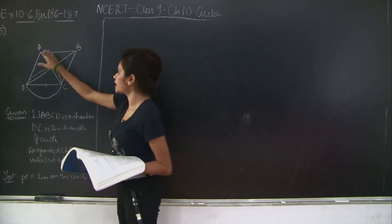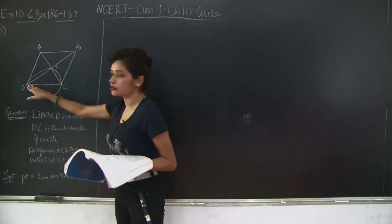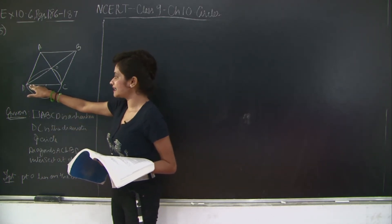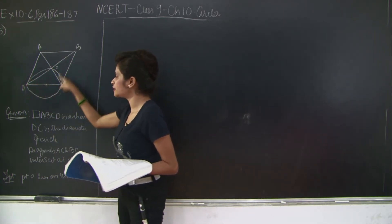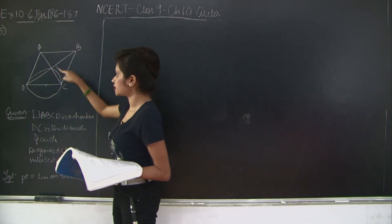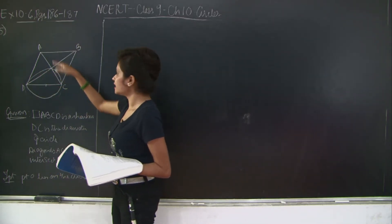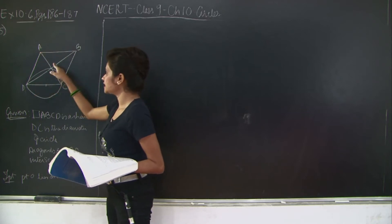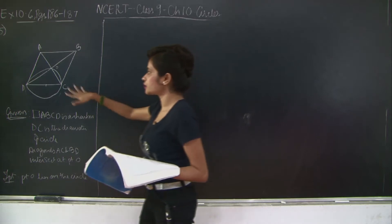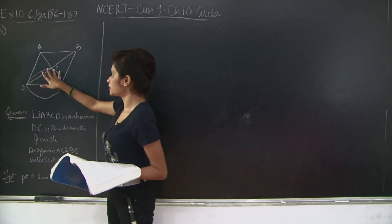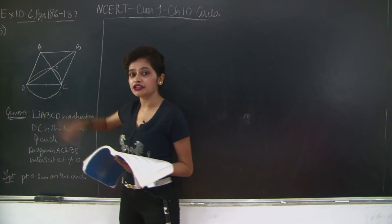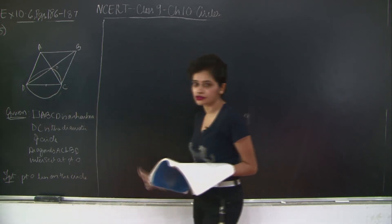Here we have quadrilateral ABCD which is a rhombus and using any side, I'm taking side DC of this rhombus as the diameter for this circle. DC is the diameter for this circle and diagonals AC and BD intersect at point O. I need to prove that O lies on the circumference of the circle — just because I drew it on the diagram doesn't mean it's proven.